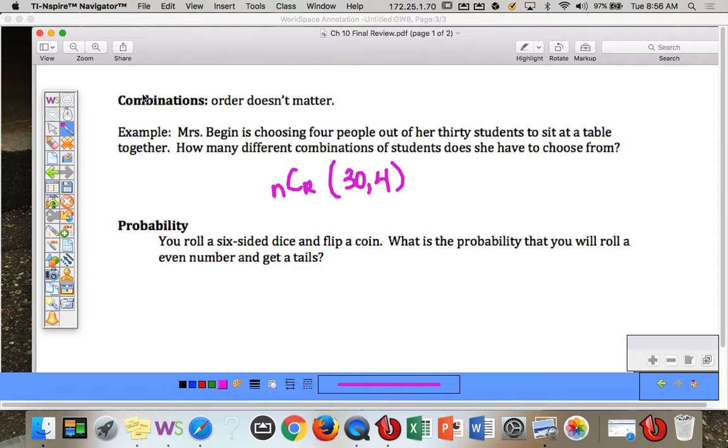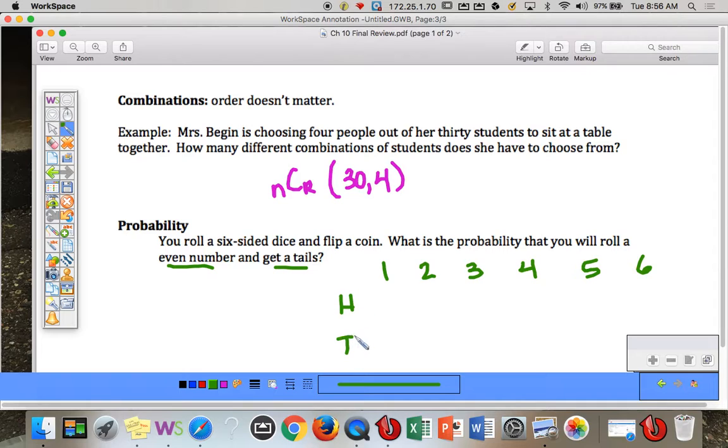And the last one, we did this in one of the other podcasts. You roll a six-sided die and flip a coin. What's the probability you roll an even number and get a tails? So six-sided coin. And you can get heads and tails.